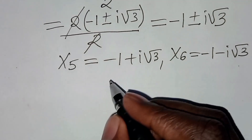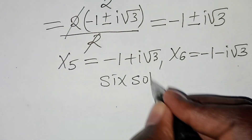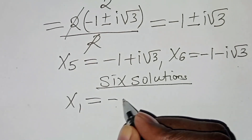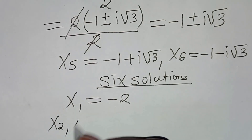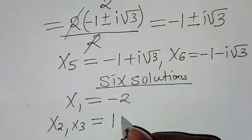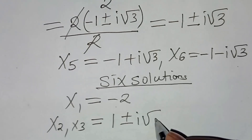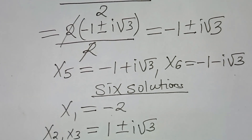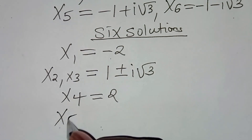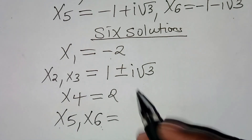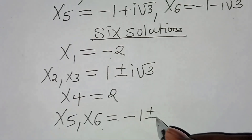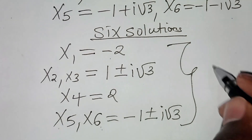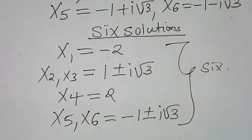Therefore, we have 6 solutions to this math problem. The first solution is x1 equals minus 2. We have x2 and x3 equal to 1 plus or minus i square root of 3. And x4 equals 2. We have x5 and x6 equal to minus 1 plus or minus i square root of 3. These are the 6 solutions.